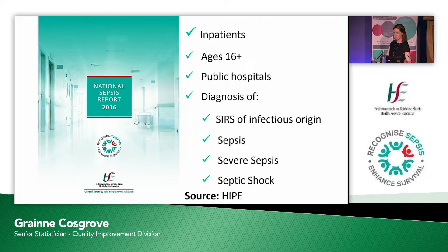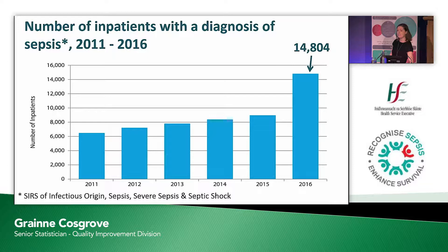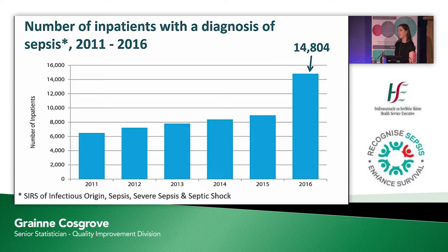We looked at patients with the diagnosis of sepsis — meaning SIRS of infectious origin without acute organ failure, sepsis, severe sepsis and septic shock. One of the key findings from the sepsis report in 2016 is that there was a 67% increase in the number of documented cases of sepsis. In 2016 there were 14,804 inpatients with a diagnosis of sepsis. There was already an upward trend between 2011 and 2015, and in total since 2011, the number of documented sepsis cases has increased by more than 100%.